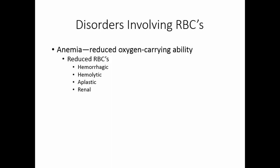Renal anemia occurs when the kidneys do not produce an adequate amount of erythropoietin and can be treated with erythropoietin. There may also be reduced hemoglobin production — red cell production is fine but there's not enough hemoglobin. Iron deficiency anemia results when the body lacks iron needed to produce hemoglobin, either from dietary deficiency or poor absorption. The cells produced in iron deficiency anemia are smaller than normal — they are called microcytes.